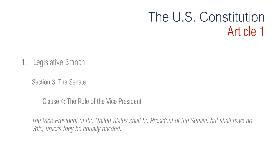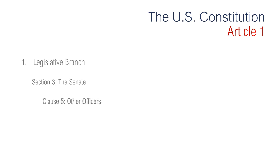Section 3, Clause 4 is regarding the role of the vice president. It says the vice president of the United States shall be president of the Senate, but shall have no vote unless they be equally divided. Basically, the only time the vice president can be part of the vote is if there's a tie, and the Constitution gives no other official duties to the vice president. Section 3, Clause 5 says that the Senate votes for one of its members to preside when the vice president is absent. This person is usually called the president pro tempore because of the temporary nature of the position.